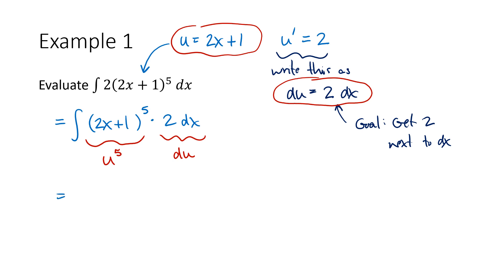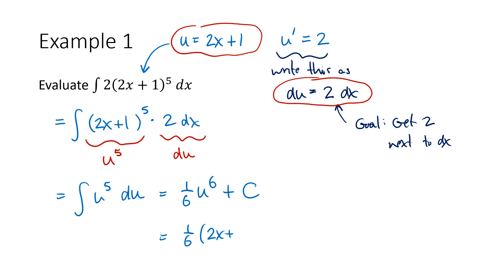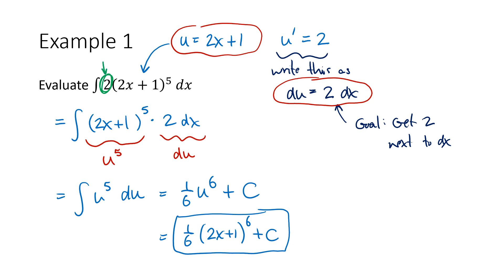That means I can rewrite this as the simpler integral of u to the fifth with respect to u. Using the power rule, that's 1/6 u to the sixth, or in other words, 1/6 times (2x plus 1) to the sixth plus c. Keep in mind that if we didn't have this extra 2, this substitution wouldn't have worked in the same way. This extra factor is going to become important as we do more examples.